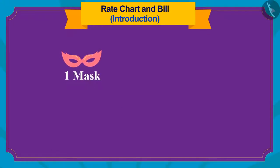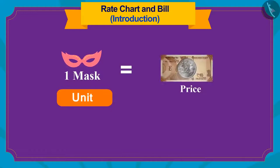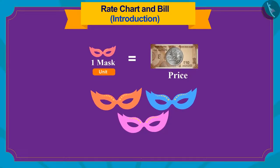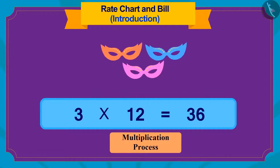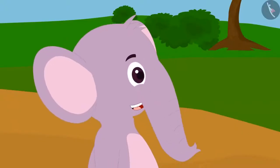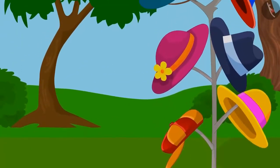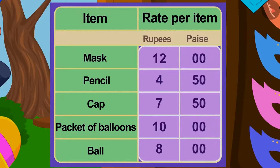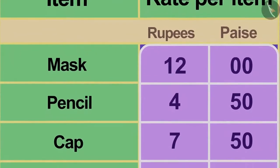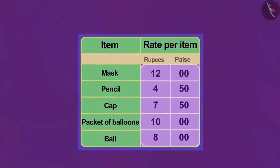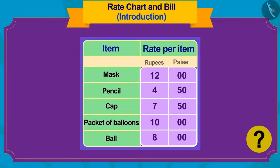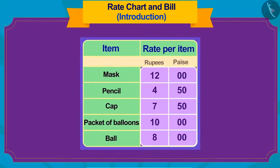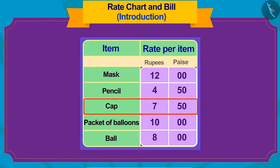Children, if we know the value of a unit of any item, then we use the process of multiplication to find the price of multiple units. Now Appu saw a beautiful cap on Banni's stall. He saw one such board next to the cap. The price of each item available at Banni's stall was written on the board. This is a rate chart. We can see the price of one piece of each item.